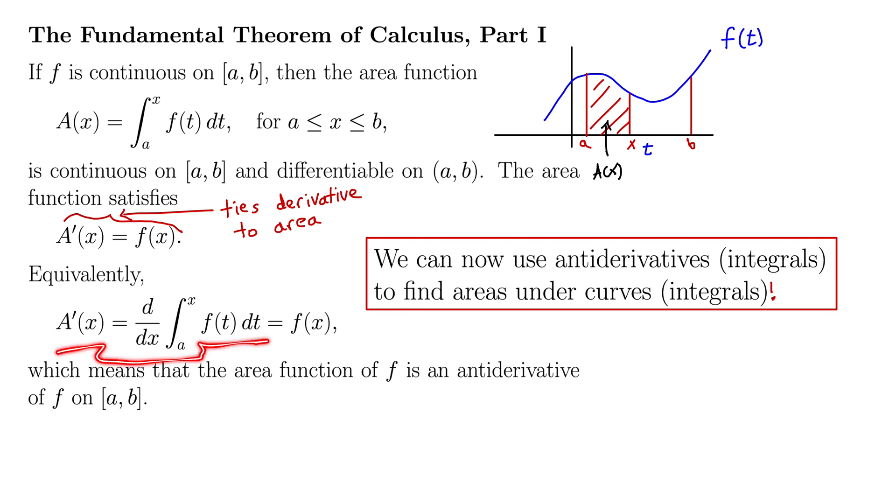This is the easiest theorem to use probably in the whole course. And you'd be surprised at how many people get this wrong. We're going to do a specific example just with this. So what this says is if you take this function and integrate it, and then take the derivative of that, well, since we now know that the anti-derivative and the area function are the same thing, when we take the derivative of the anti-derivative, we get the original function back. So when we take the derivative of the integral, the area function integral, we get the original function back.